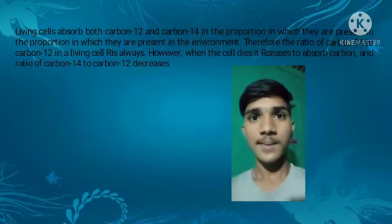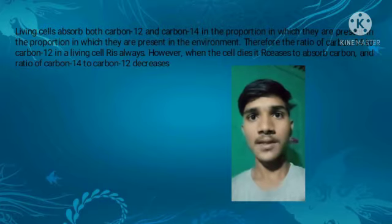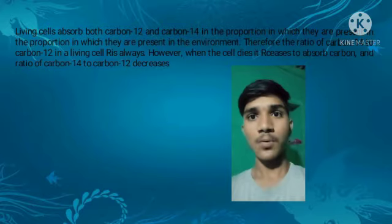Living cells absorb both Carbon-12 and Carbon-14 in the proportion in which they are present in the environment. Therefore, the ratio of Carbon-14 to Carbon-12 in a living organism remains constant. However, when the cell dies, it ceases to absorb carbon, and the ratio of Carbon-14 to Carbon-12 decreases.